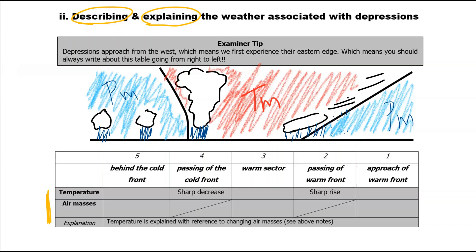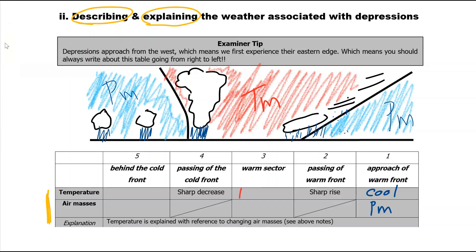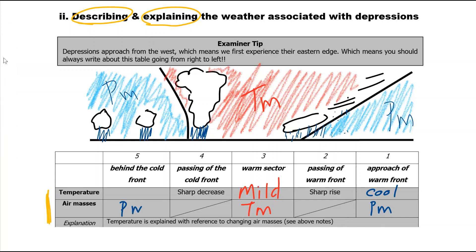Remember, a depression approaches from the west, so the first part of the depression you experience is the right-hand side. We start at number one: the approach of the warm front. The temperature here is cool, explained by the PM air mass. As the warm front passes over, you get a short rise in temperature — the temperature in the warm sector we'd describe as mild, explained by the TM air mass. Then behind the cold front where you've got your PM air again, the temperature drops down to being cold.